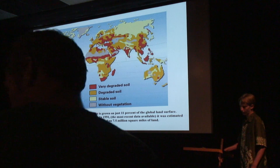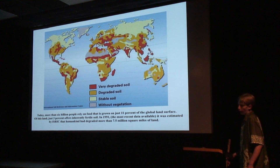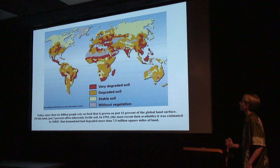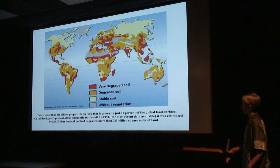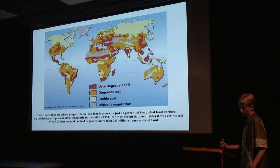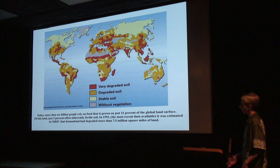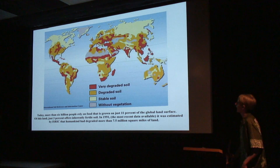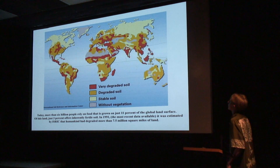Human-induced soil degradation is transforming productive agricultural areas into wastelands at tragic speeds. In 1991, which is sadly the most recent data available, it was estimated that humankind had degraded more than 7.5 million square miles of land. And you can see in this picture that all the developed areas have degraded soil.